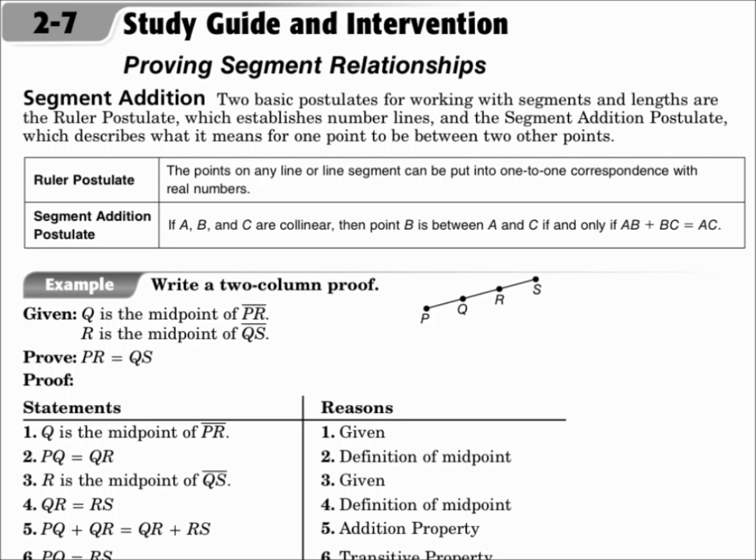Two basic postulates for working with segments and lengths are the ruler postulate, which establishes number lines, and the segment addition postulate, which describes what it means for one point to be between two other points.